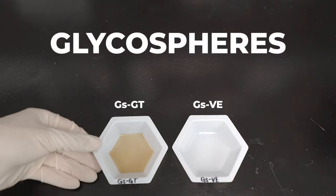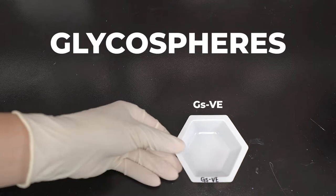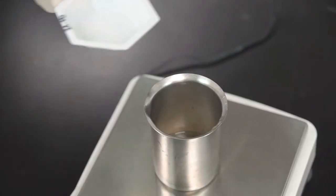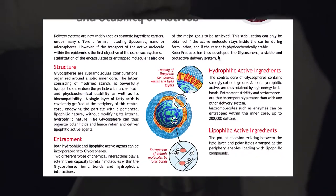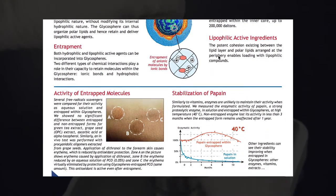Lastly we add in Kobo's glycospheres GSGT and GSVE. These are stable protective delivery systems that encapsulate active materials.